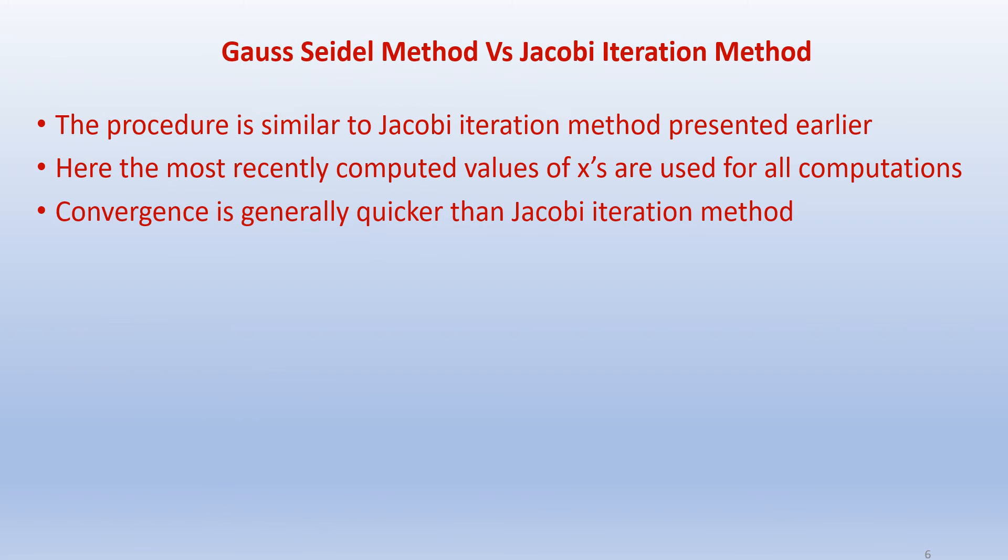What is the difference between Gauss-Seidel method when compared with Jacobi iteration method? The procedures are very similar. In Jacobi iteration method, we compute all the values of X at all the rows.